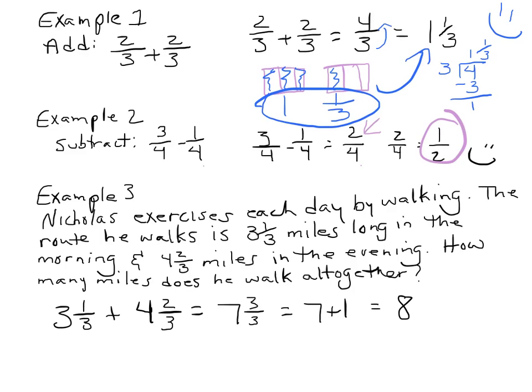Let's look at number 3. Nicholas exercises each day by walking. The route he walks is 3 and 1 third miles long in the morning and 4 and 2 thirds miles in the evening. How many miles does he walk all together? So we're going to add 3 and 1 third and 4 and 2 thirds. We're going to end up with 7 and 3 thirds. We know that 3 thirds equals 1 whole. So 7 plus 1 equals 8. 8 miles. Because we always have to remember to label.